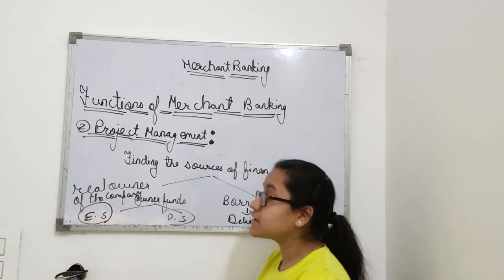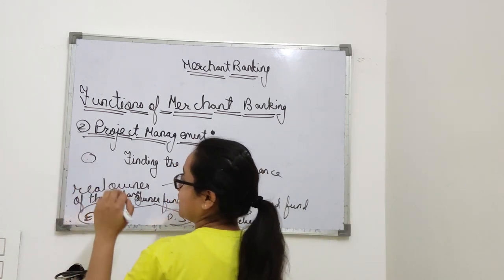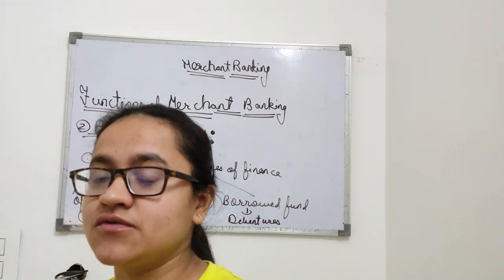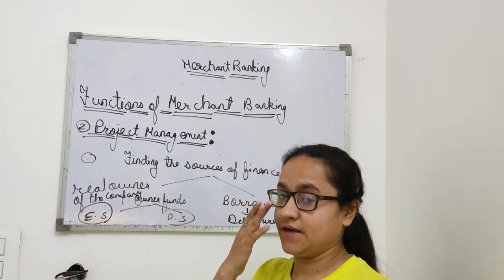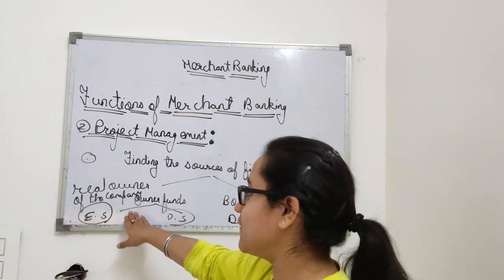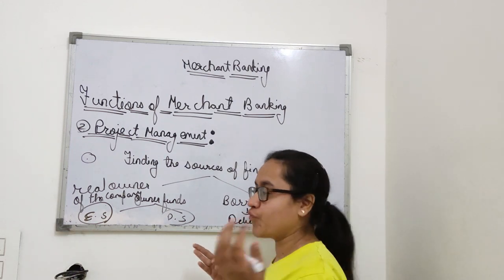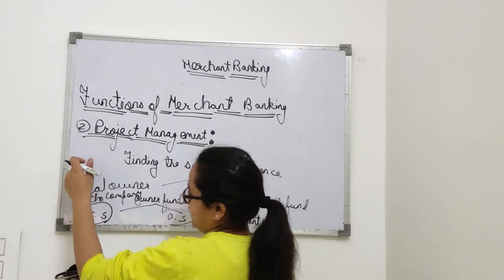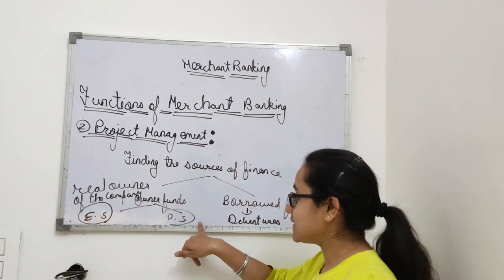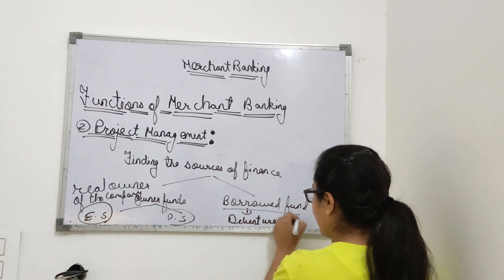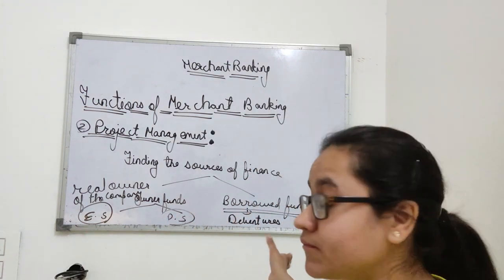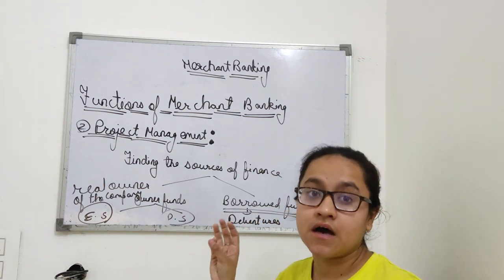With owner's fund, there is a little more risk — if there is profit, equity shareholders get paid last, after debentures and preference shares. Preference shares come in types: cumulative, non-cumulative, convertible, and non-convertible. Preference shareholders are paid first, before equity. In borrowed funds such as debentures, we pay interest on the capital borrowed.